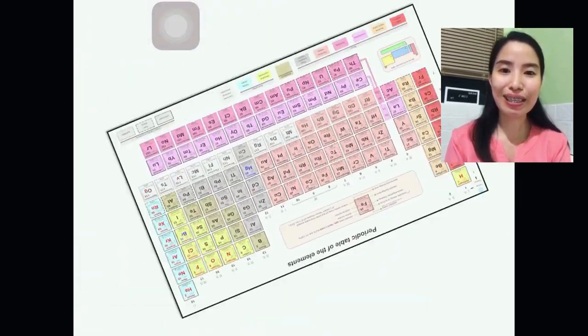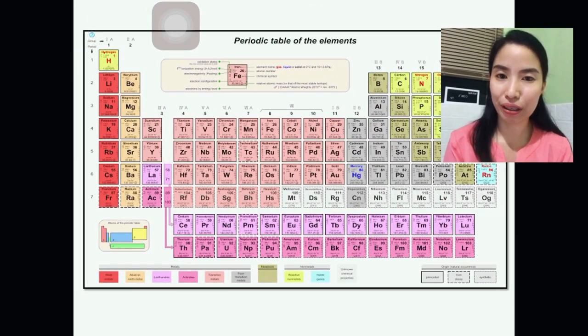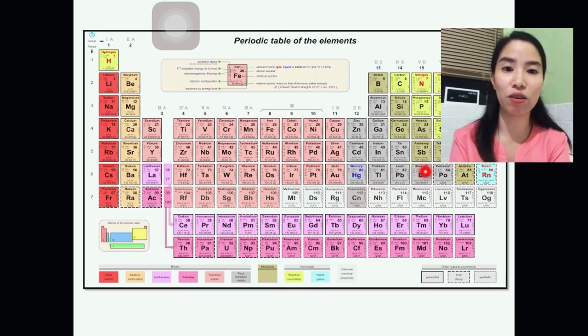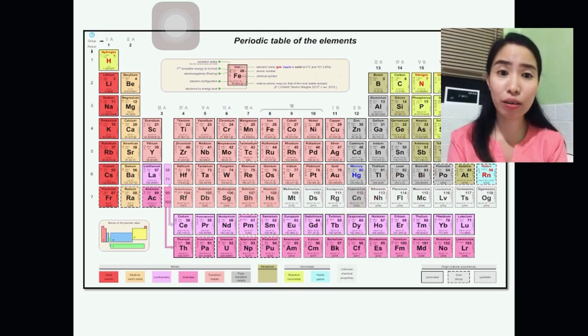So, this is an example of modern Periodic Table. Observe it. And as I can observe, it has lots of colors and letters and also numbers. What are the parts?